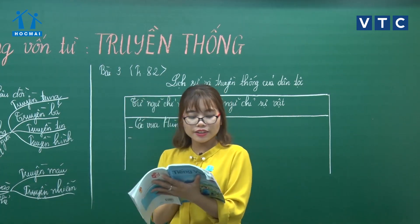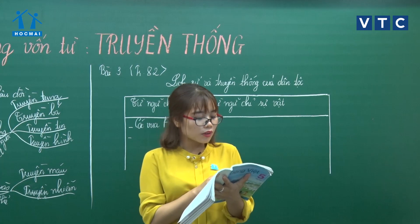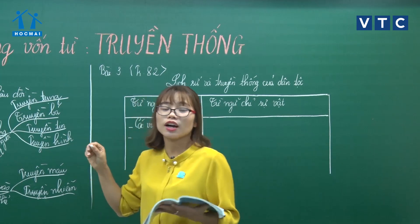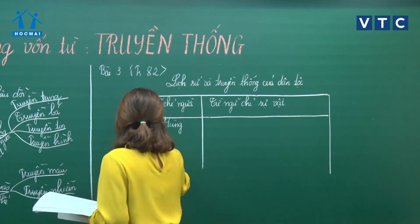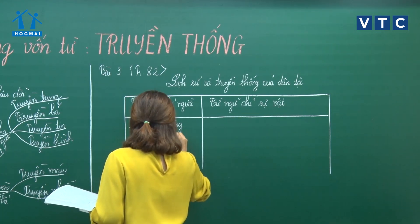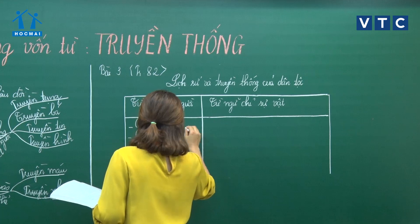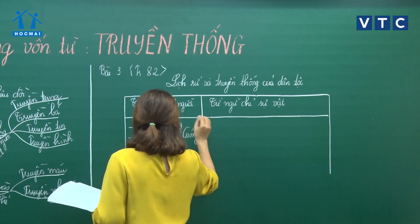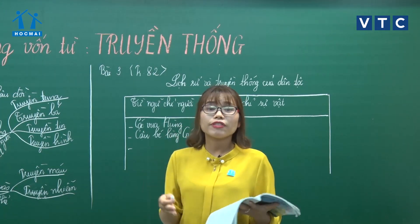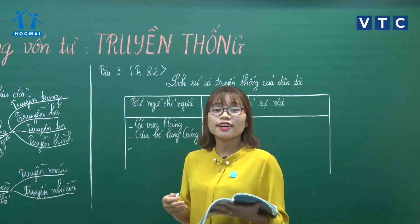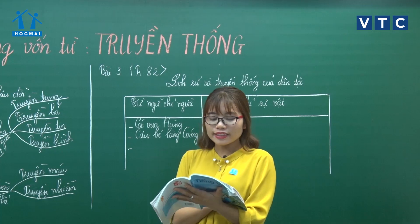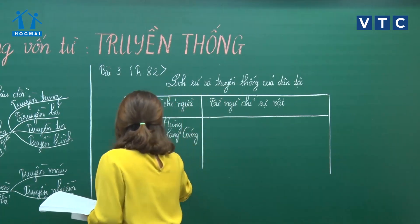Thứ hai, con dao cắt rốn của cậu bé làng Gióng - tức là nhắc đến Thánh Gióng. Từ ngữ chỉ người thứ 2 là cậu bé làng Gióng. Thứ ba là đại thần Phan Thanh Giản. Từ ngữ chỉ người gồm: các vua Hùng, cậu bé làng Gióng, Phan Thanh Giản.